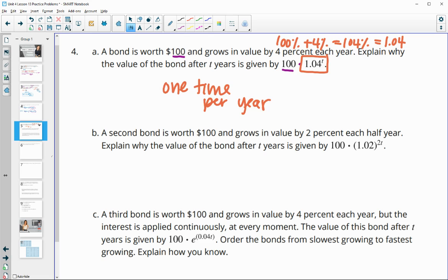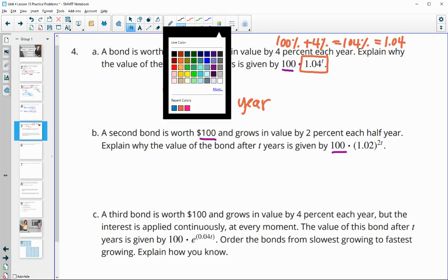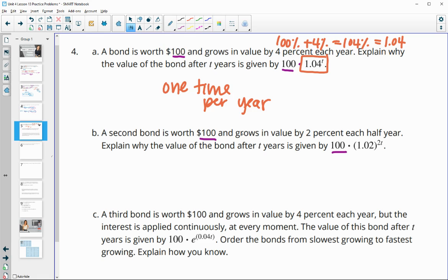Now, this next one says a second bond is worth $100. So we've still got this 100 as our initial value. And then this time it says that it grows in value by 2% each half year. So now we've got the growth rate at 2%. So 102%, two times per year. So this 2 to the t, because it's happening two times per one year. And so then we have to account for that in the exponent here by putting 2t instead of just t.